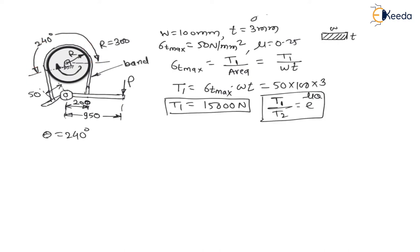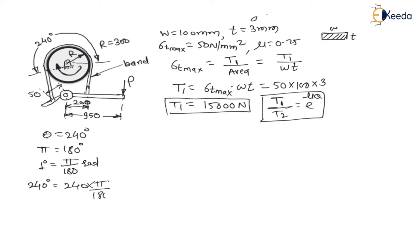The angle of contact θ is 240 degrees. We know that π radian equals 180 degrees, therefore 1 degree equals π/180 radian. So 240 degrees equals 240 × π/180 radian. We must use θ in radians, so θ = 240π/180 radian.